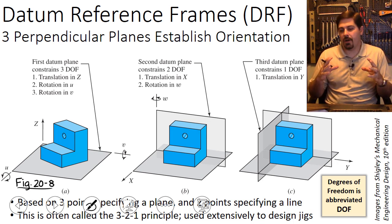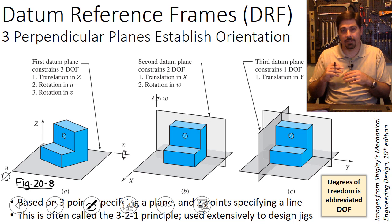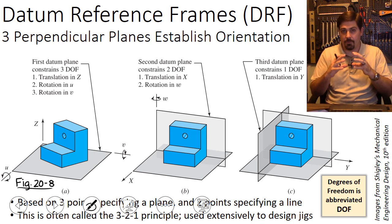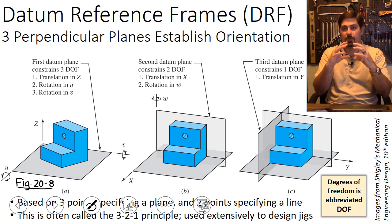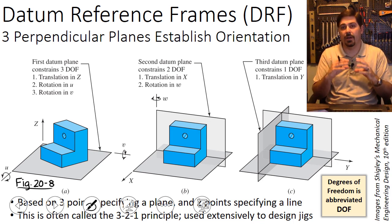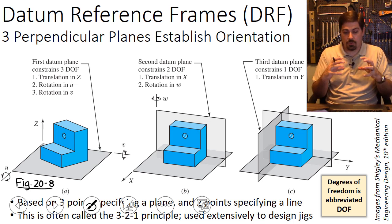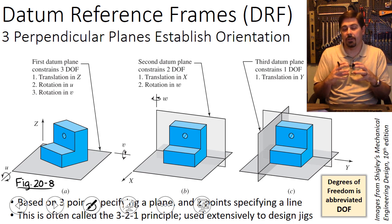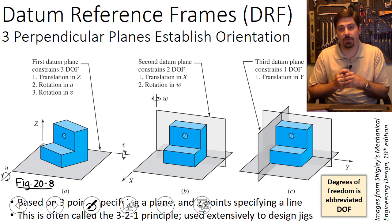A rigid body in 3D space has six degrees of freedom naturally — it can translate in three different directions and rotate about three different axes. If we want to fully constrain a part and keep it in a particular location, we've got to put enough constraints on it so that it can't move in any of those directions.